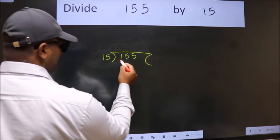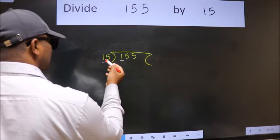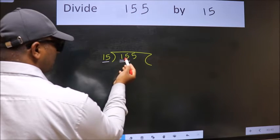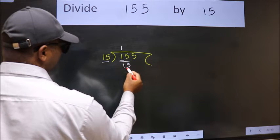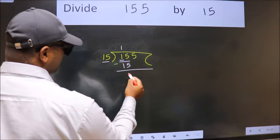155. Here we have 1. Here 15. 1 is smaller than 15, so we should take two numbers: 15. When do we get 15 in 15 table? 15 once 15. Now we should subtract. We get 0.